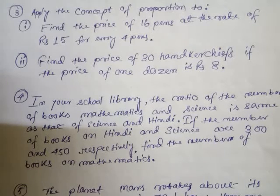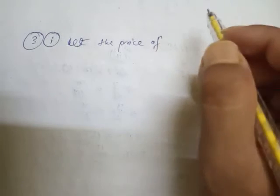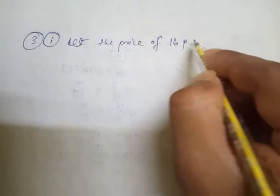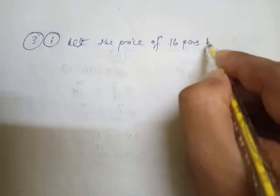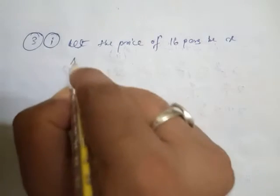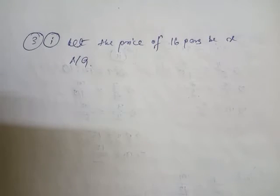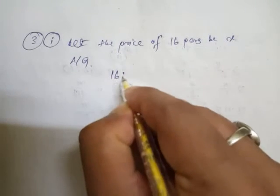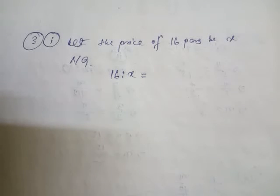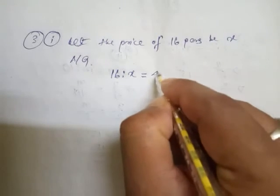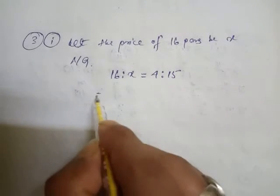Question 3, Roman 1: First of all, let the price of 16 pens be x. According to the question, we need to apply the concept of proportion. It is given: at the rate of rupees 15 for every 4 pens, which means for every 4 pens, rupees 15.